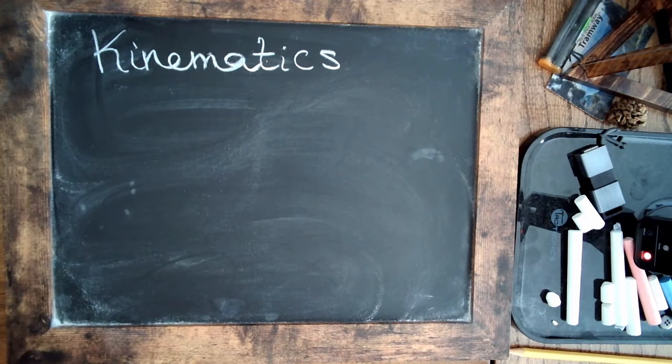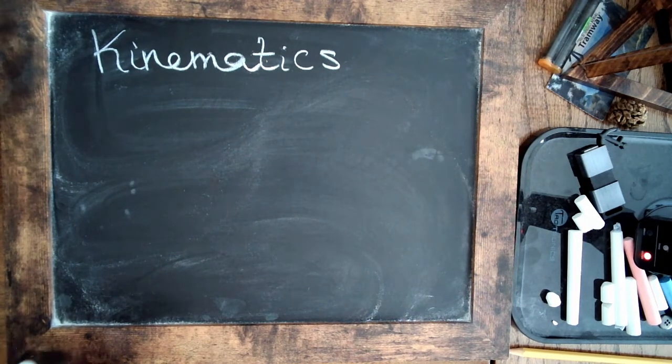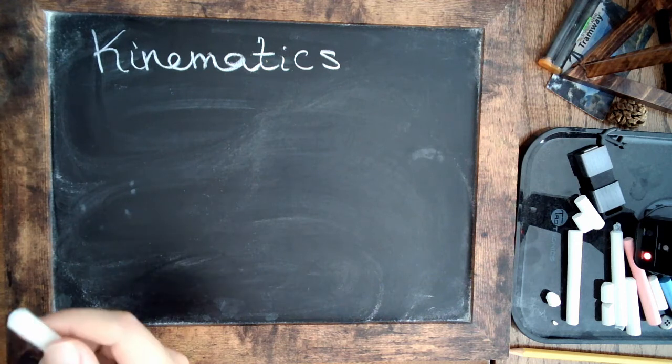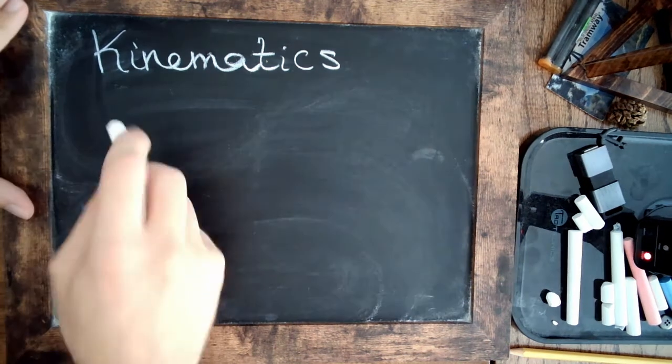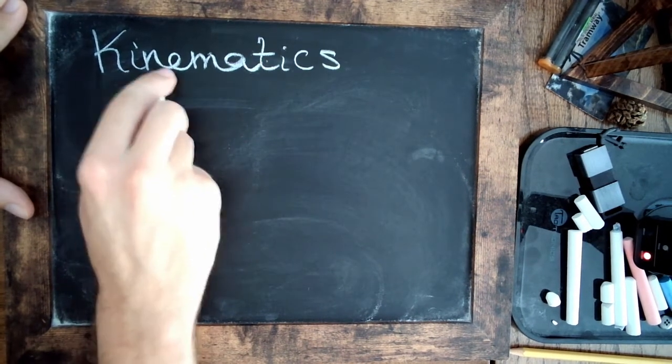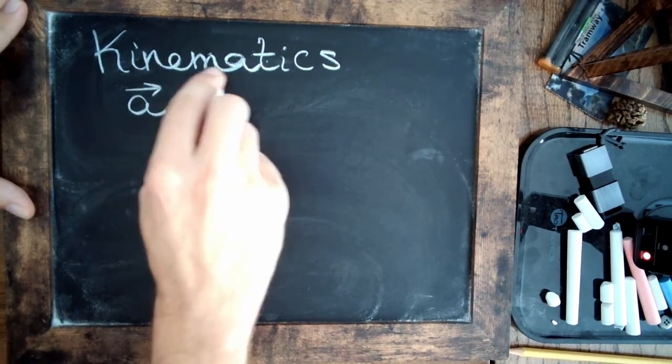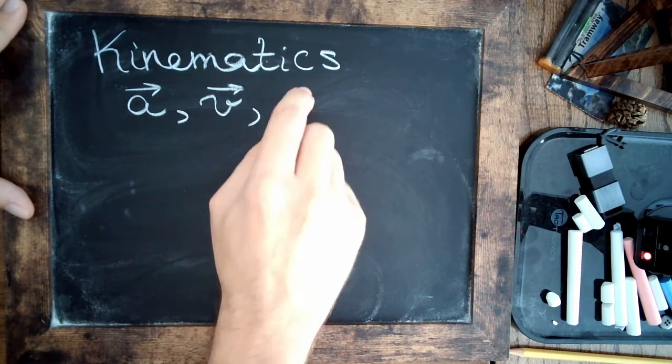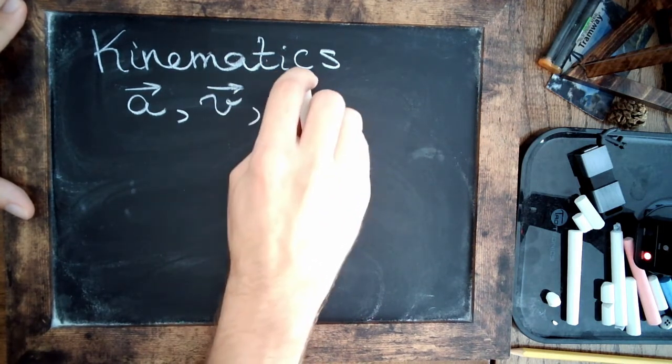So kinematics, as my physics one professor used to say, is really just applied calculus. It's the study of the position of idealized objects using Newton's basic equations, in which the quantities we're interested in are acceleration, velocity, and position, which I'll just call R.